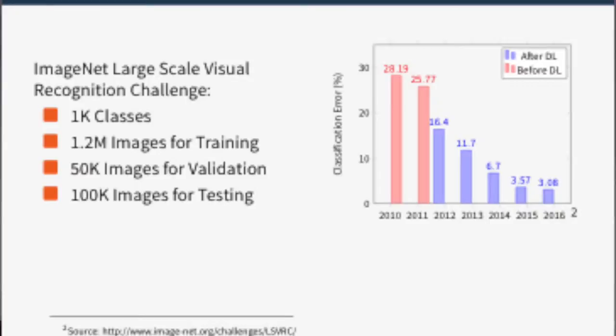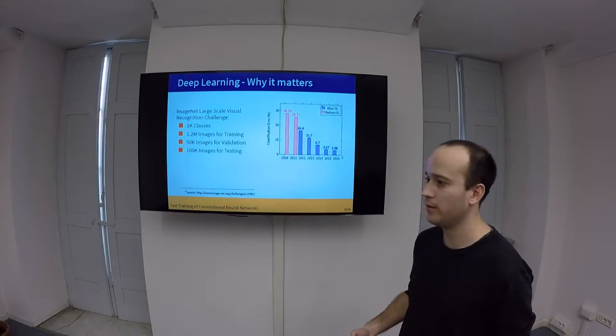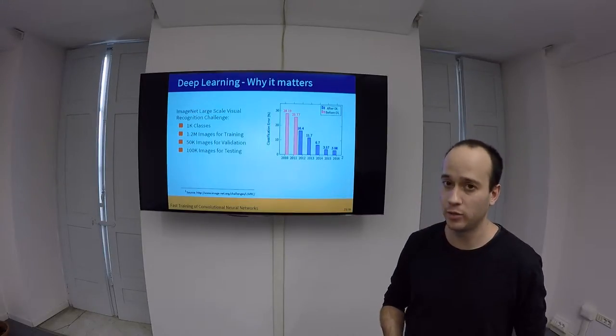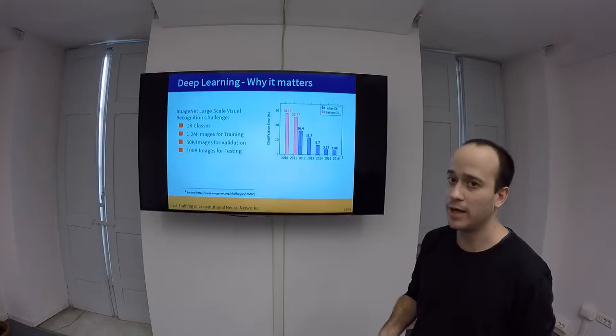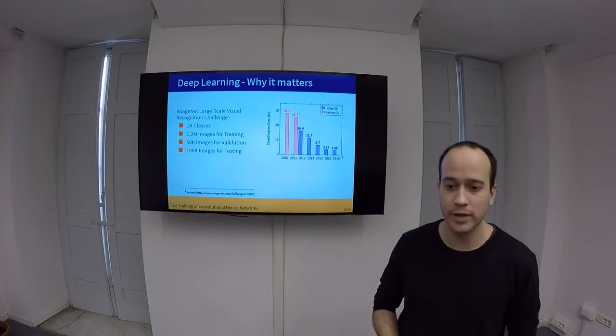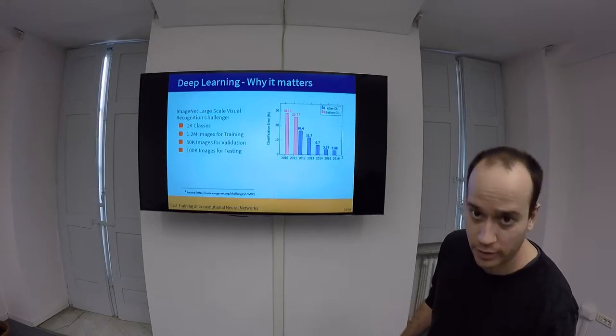And now we have something of around 3%, that means that if I have a test where I have 100,000 images to train a convolutional neural network for correctly classifying these images, at the end, I have only 3.08% error.